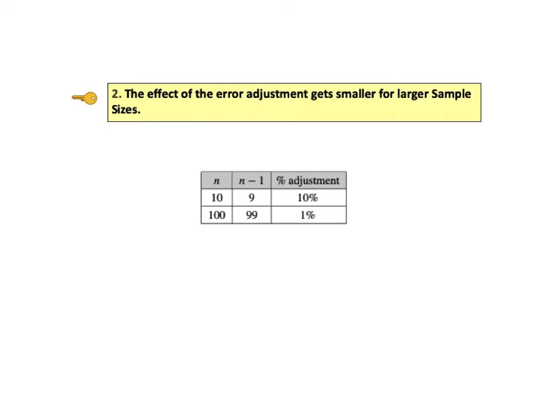Key to understanding number 2 says the effect of the error adjustment gets smaller for larger sample sizes. The adjustment is applied because using sample data will never be as accurate as using all the population or process data would be, if that were possible and practical. However, using a larger sample will always have less inherent error than using a smaller sample.